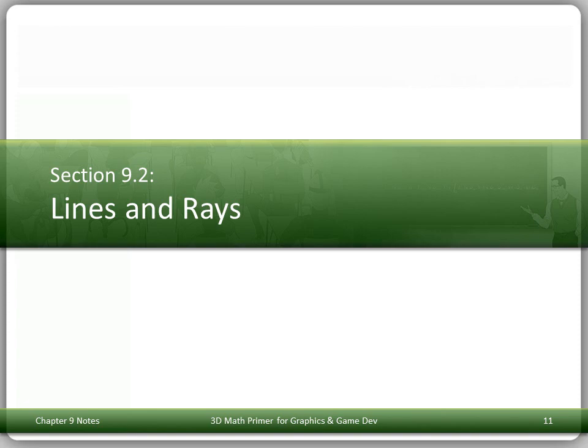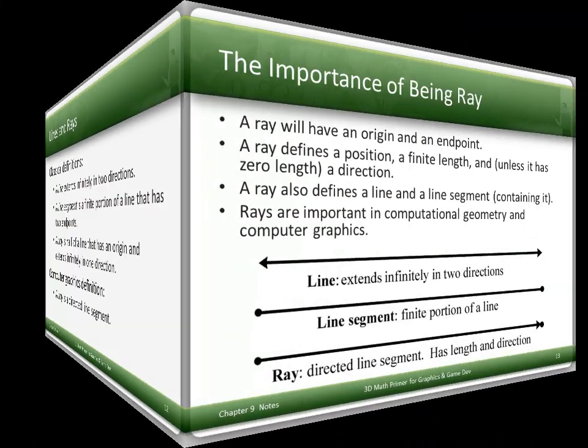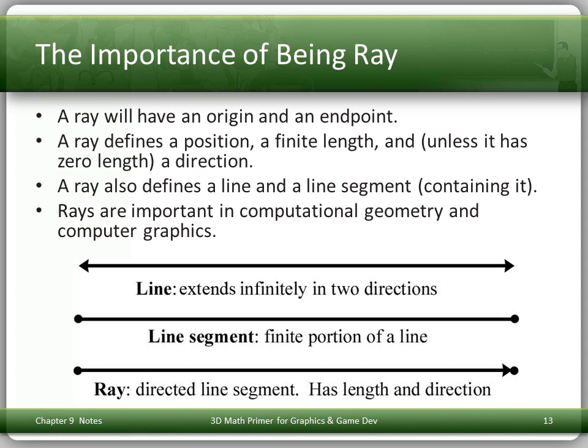Beginning with lines and rays. The classical definitions: a line extends infinitely in two directions. A line segment is a finite portion of a line that has two endpoints — not infinite in either direction. A ray is in between: it's half of a line that has an origin and extends infinitely in one direction. It's a line segment at one end and a line at the other end. The computer graphics folks have conventionally used the term ray slightly differently to denote a directed line segment. For us, a ray will have an origin and an endpoint — it defines a position, a finite length, and, unless it has zero length, a direction.